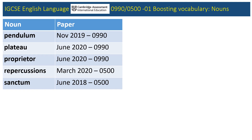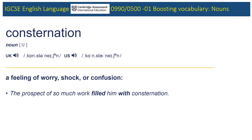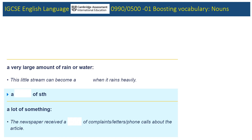Before we move on to the final five, could you help me out with these quick questions? What noun beginning with C means a feeling of worry, shock or confusion? It is, of course, consternation. And what D can refer to a huge quantity of rain or water, or simply a lot of something? It is, of course, a deluge.